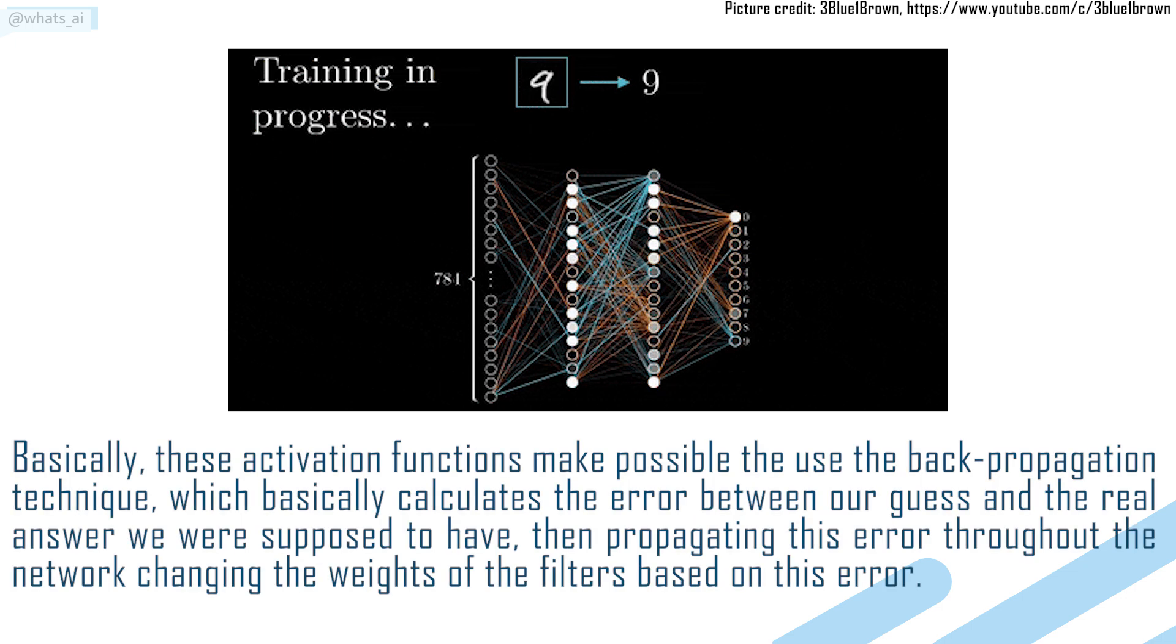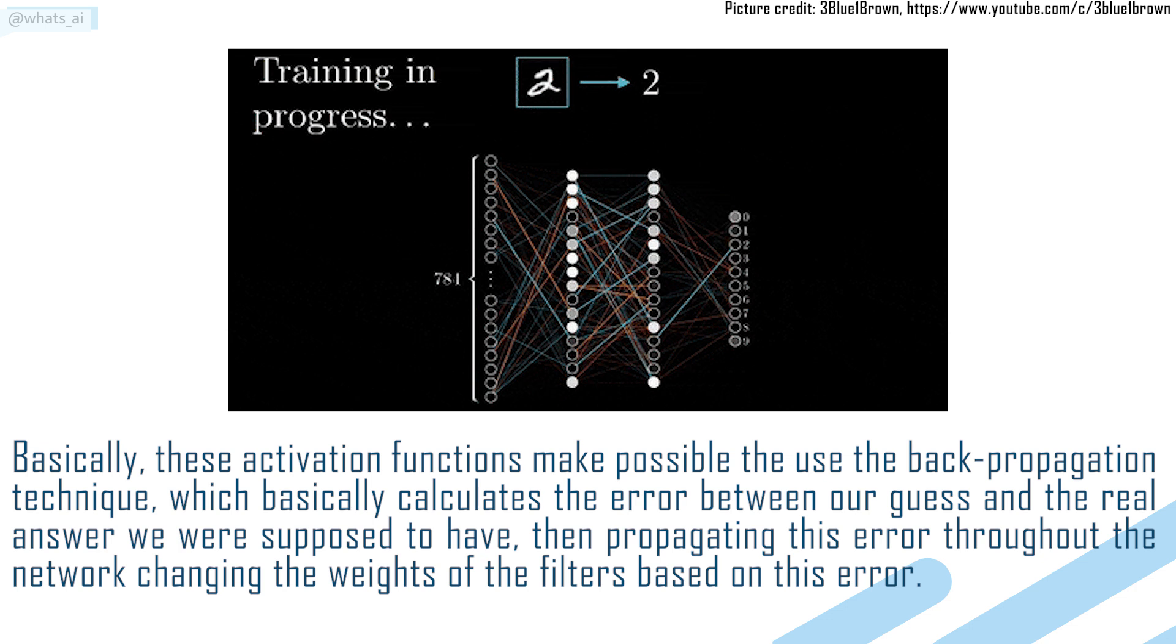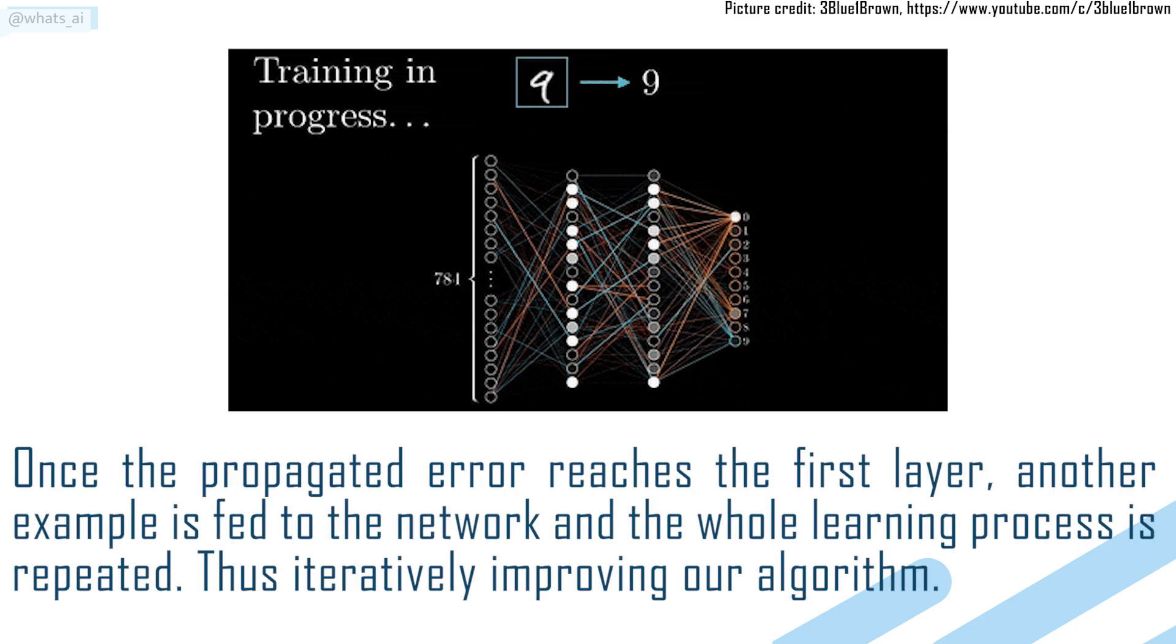Basically, these activation functions make possible the use of the backpropagation technique, which calculates the error between our guess and the real answer we were supposed to have. Then, propagating this error throughout the network, changing the weights of the filters based on this error. Once the propagated error reaches the first layer, another example is fed to the network and the whole learning process is repeated, thus iteratively improving our algorithm.